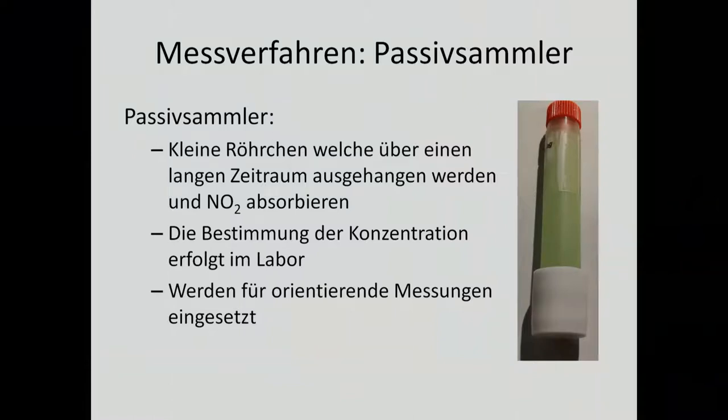An alternative process is the so-called passive collectors, used for long-time average measurements. They are small tubes filled with a chemical that accumulates NO2 inside the tube over time. Afterwards they are processed in a laboratory, and based on the collected NO2 values you can estimate the average NO2 over the respective time period. This method has usually about 20% error.